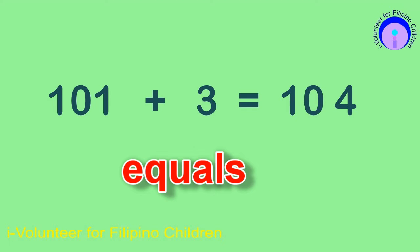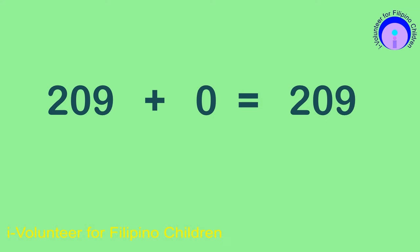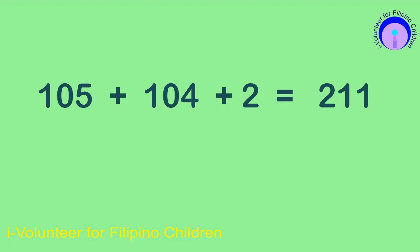Now it's your turn to read after me. 209 plus 0 is equal to 209. 105 plus 104 plus 2 is equal to 211.